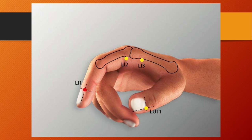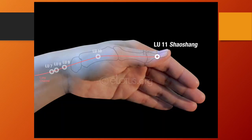LI1, Shangyang or metal yang, is located on the radial end of the distal phalanx of the index finger, 0.1 tsun from the corner of the nail. LI1 is the jingwell point of the large intestine meridian. Functions: clears heat, revives consciousness, benefits the throat. Needling: shallow insertion, 0.1 tsun or prick to bleed. Lung 11, Shaoshang or lesser metal, is located on the radial side of the thumb, 0.1 tsun from the corner of the nail. Jingwell point of the lung channel. Functions: expels exterior and interior wind, benefits the throat, clears heat, resuscitates. Needling: insert obliquely 0.1 tsun towards upper direction or prick to bleed.